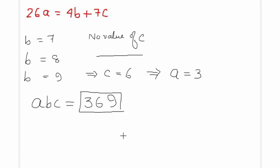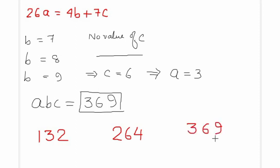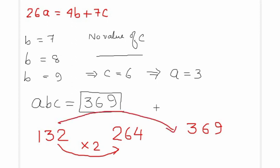In a nutshell, there are only 3 numbers with the said property: the first is 132, the second is 264, and the third is 369. Can you see any similarity? Yes — the second number is double the first, and the third number is triple the first.